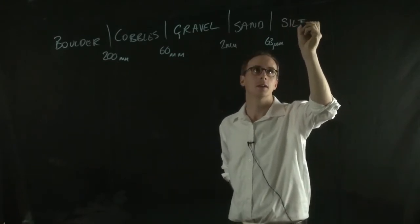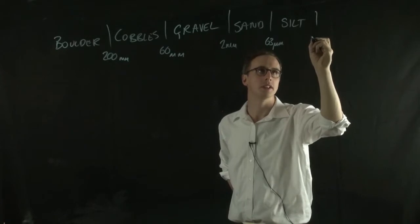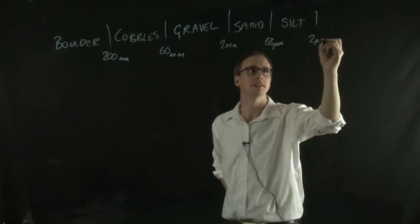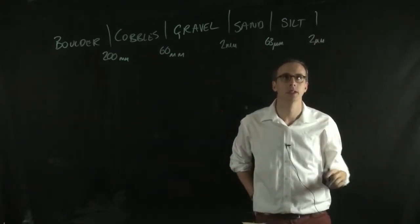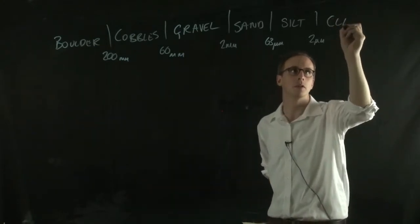There's silt, which is anything above 2 micrometers and 63 micrometers, and then anything under that we call clay.